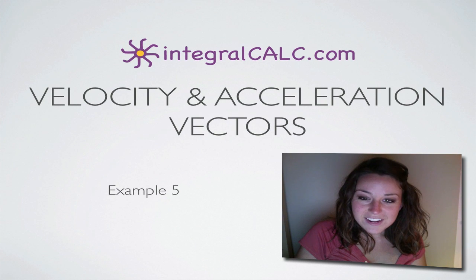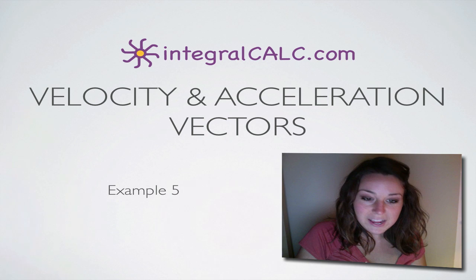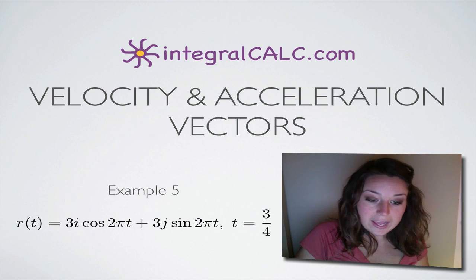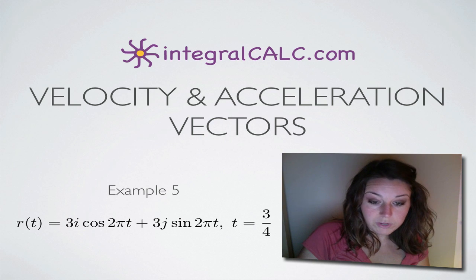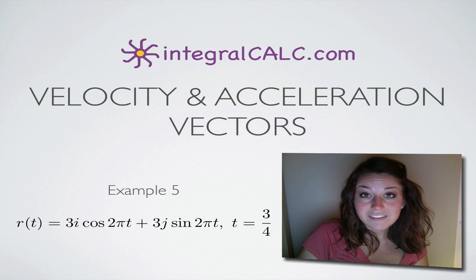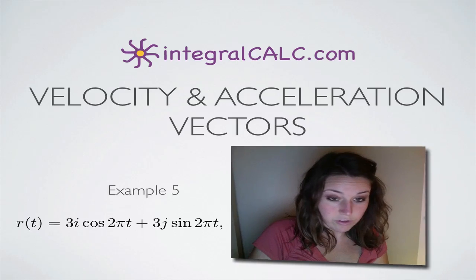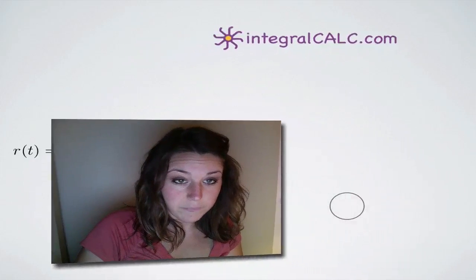We're going to be doing another velocity and acceleration vectors problem today. The function that we're given is r of t equals 3i cosine of 2 pi t plus 3j times sine of 2 pi t. They've asked us to find both velocity and acceleration vectors at the point where t is equal to 3 fourths.